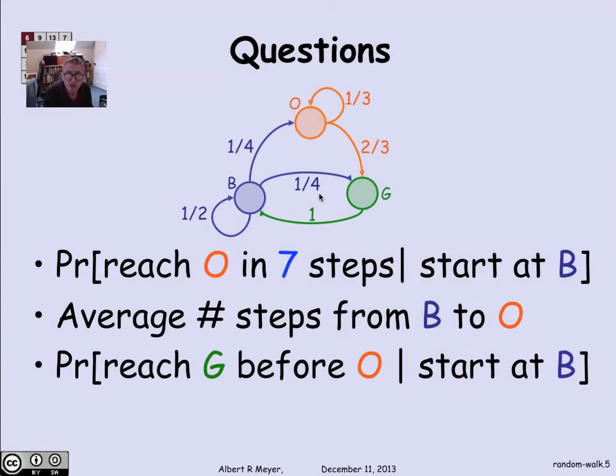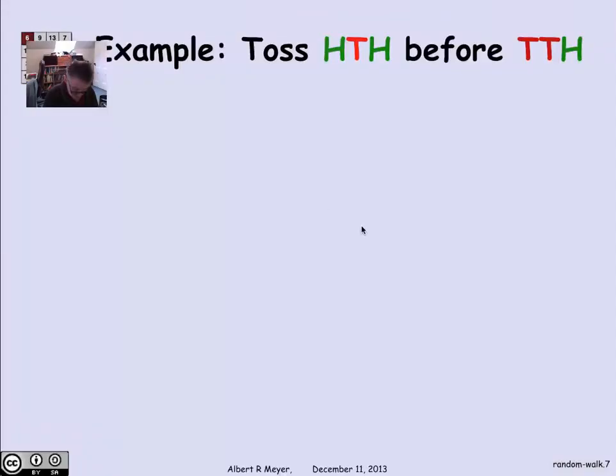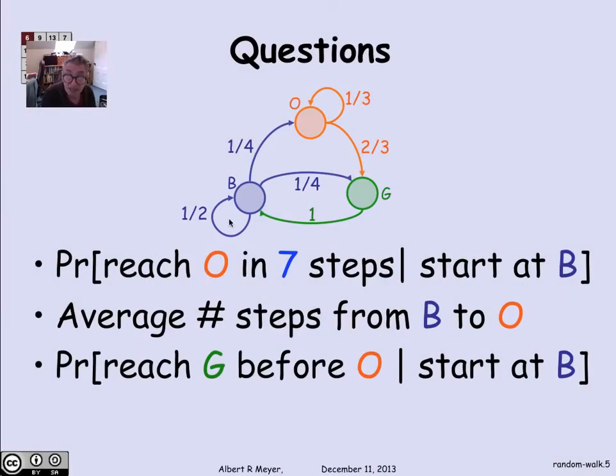The general kinds of questions that come up when talking about random walks on graphs are illustrated by this simple three-state example with blue, orange, and green. We might ask, for example, starting at state B, what's the probability of reaching state O in seven steps? That would be easy enough to calculate in this small example, but it would be a typical question. A more interesting general question would be, what's the average number of steps that it takes to get from B to O?